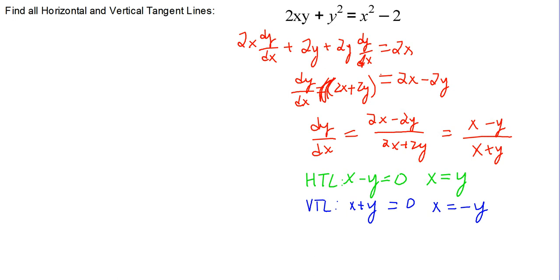First, we'll look at the horizontal tangent lines. When x equals y, we have to figure out when that is true in our original equation. We'll go back up and replace all of the y's with x's. That will give us 2x times x, so 2x squared, plus x squared equals x squared minus 2.